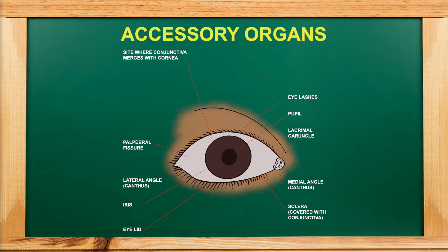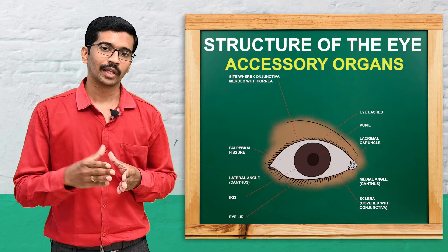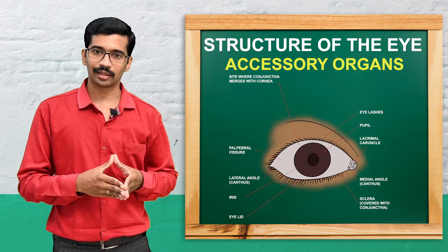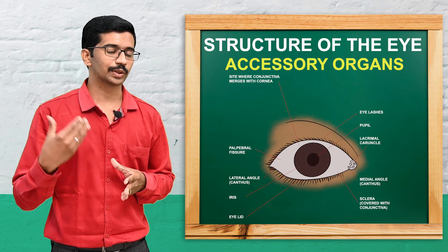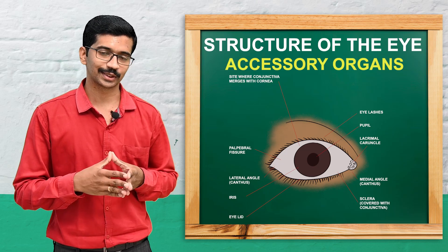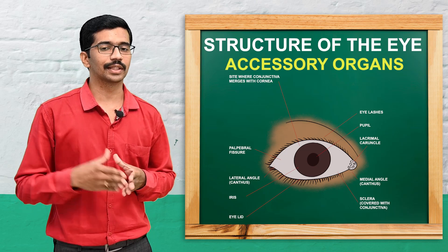There are also hair follicle-like structures called eyelashes. Another structure is the palpebral fissure, which is the space between the two eyelids. Additionally, there are lacrimal glands which secrete tears. These are the associated accessory structures of the eye.